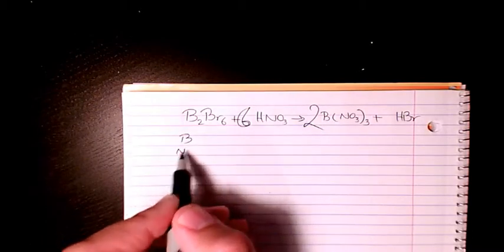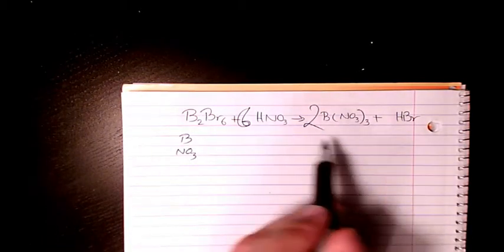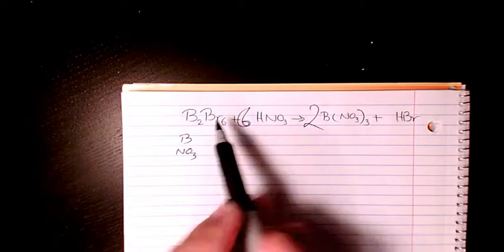So B is balanced, NO3 is balanced. What about Br? Br we have six of them here, so we need to have six of them on this side as well. Br is balanced too.